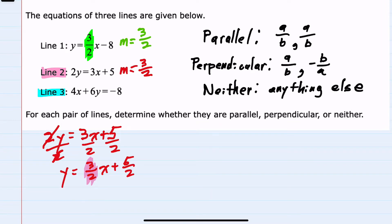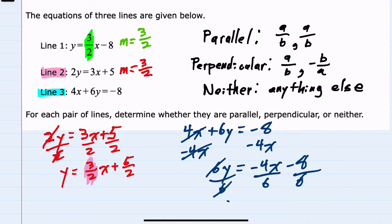And I can solve it for Y to find the slope as well, starting with 4X plus 6Y equals negative eight. To solve for Y, I would first subtract the 4X over to the right-hand side. So 6Y equals negative 4X minus eight.